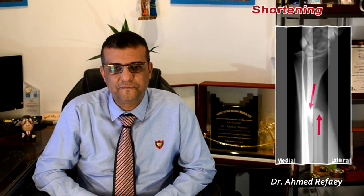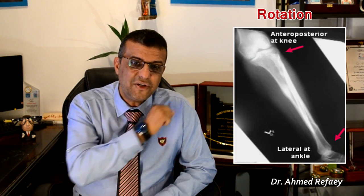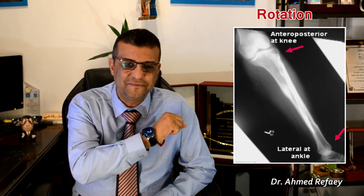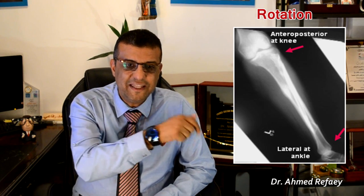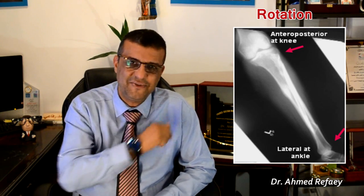Rotation almost always involves long bones like the humerus and femur. To diagnose rotation, look at this image: the knee joint is in an anteroposterior position pointing forward, while the ankle is pointing laterally. That concludes the direction of the fracture line and the relationship of the fragments.